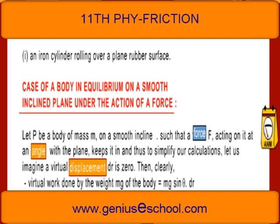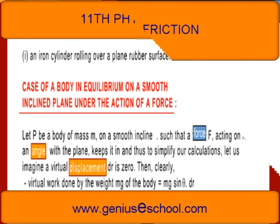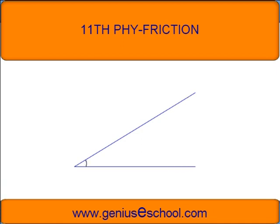Case of a body in equilibrium on a smooth inclined plane under the action of a force: Let P be a body of mass M on a smooth inclined plane of angle θ, such that a force F acting on it at an angle φ with the plane keeps it in equilibrium. The normal reaction of the plane obviously acts perpendicularly to the plane.